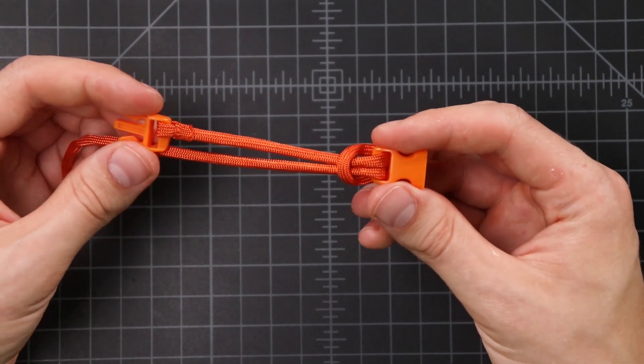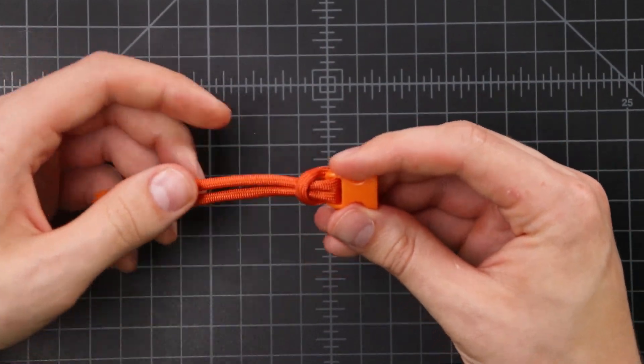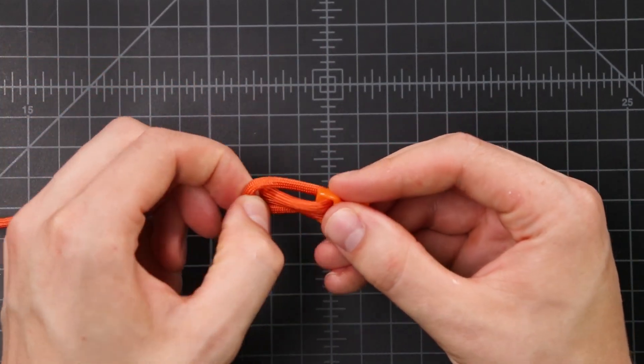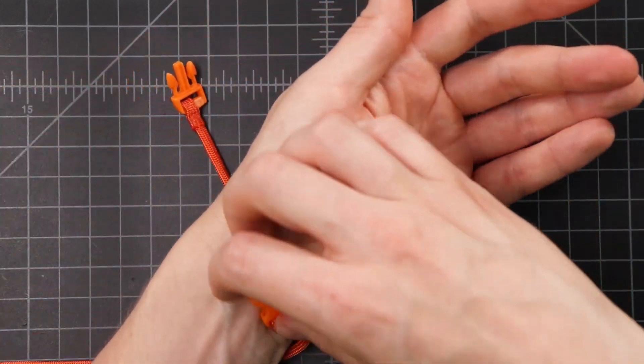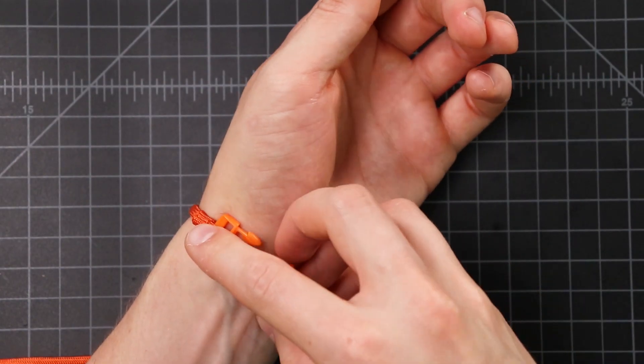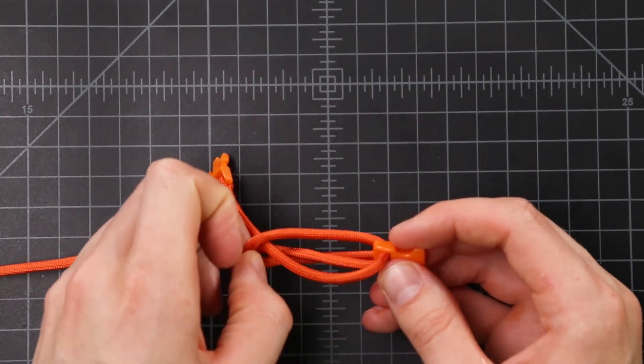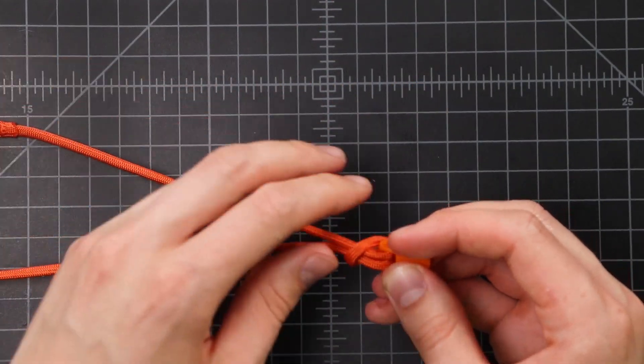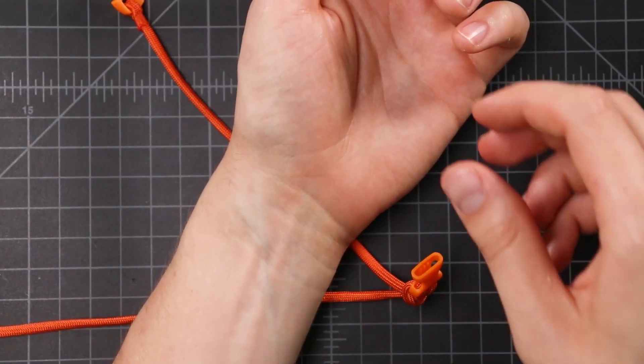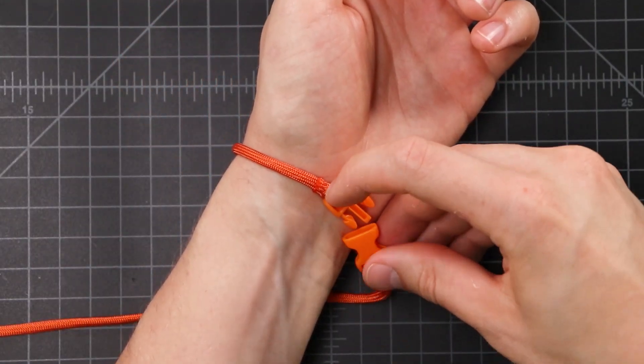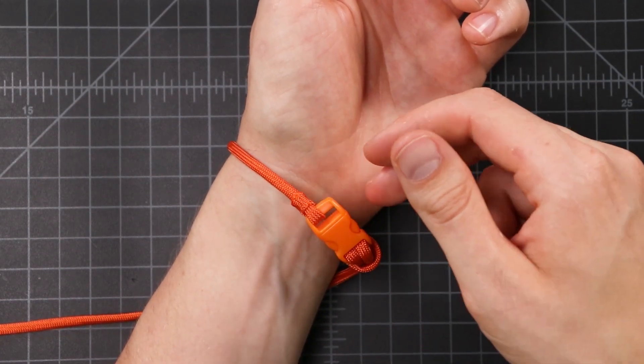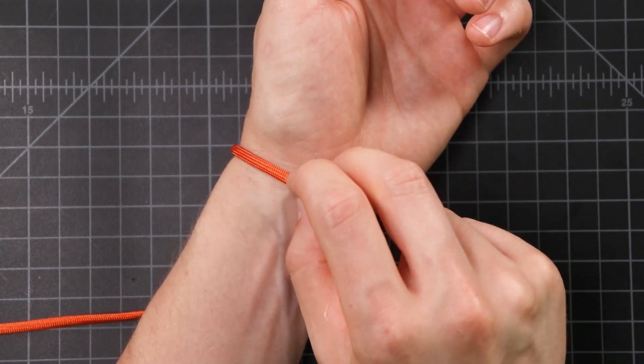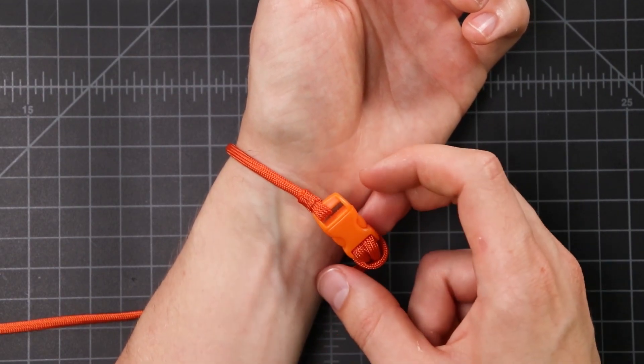This is obviously shorter than we want the bracelet to be. So let's adjust that now. Loosen up your cow hitch. And try on the bracelet. You want the bracelet to fit loosely on your wrist with two fingers underneath. And that will give us enough room to make the bracelet wider than the single strand that you see right here.